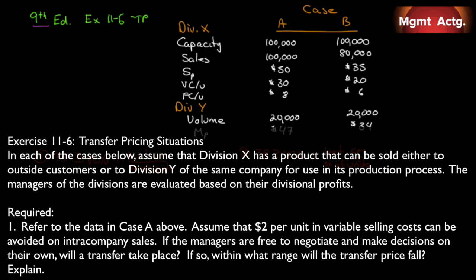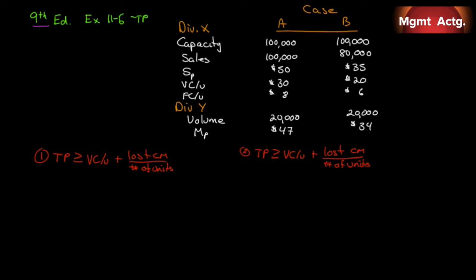Required for Case A: assume $2 per unit in variable selling costs can be avoided on intra-company sales. If managers are free to negotiate, will a transfer take place? If so, within what range will the transfer price fall?